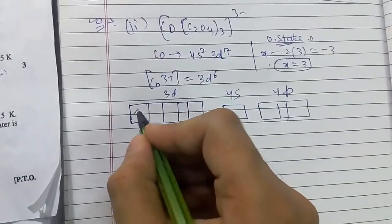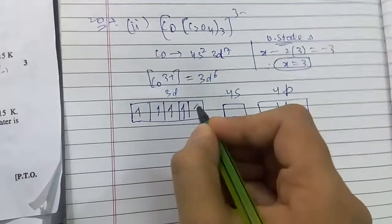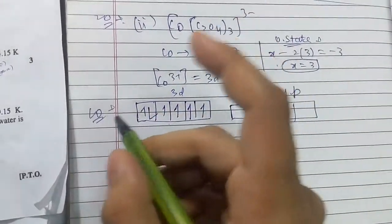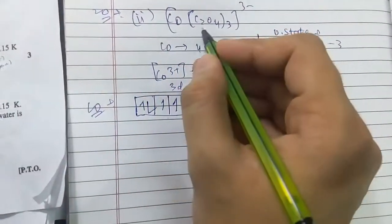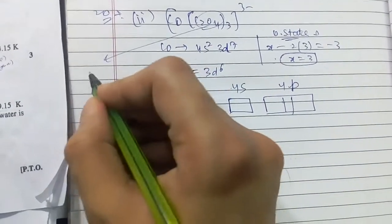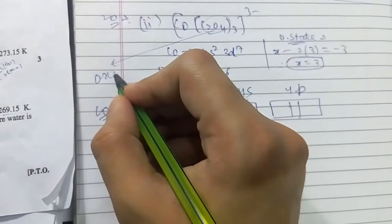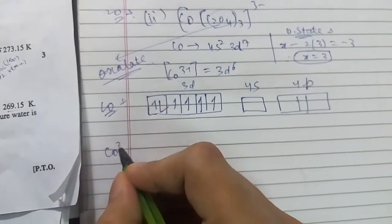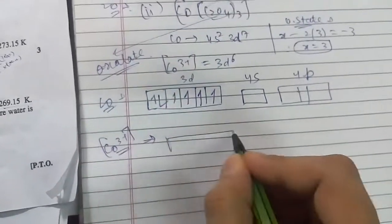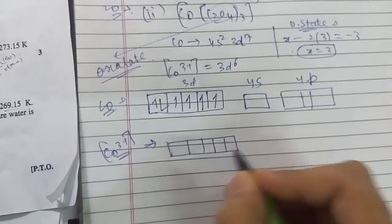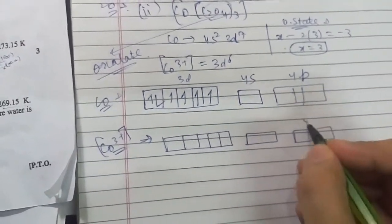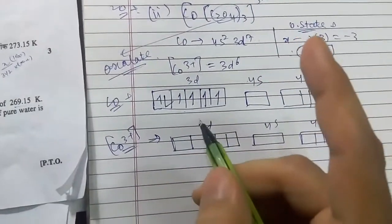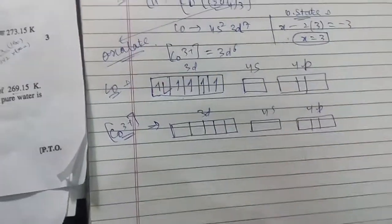Now this is for Co when C2O4 is not present. Now this C2O4, oxalate, is a very important question. So Co3+ exists as 4s, 4p, 3d. Now Co is behaving as, sorry, oxalate is behaving as a strong field ligand, and so I have to pair them.